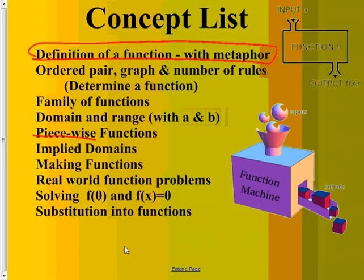So what is a function? It's like a machine. If you put in an input of 2 and a 6 pops out, that's totally fine. It could keep it the same or change it - we don't have rules like that. But if I put in a 2 again and I get something different, like a 7, that breaks the rules, and so that would not be a function.